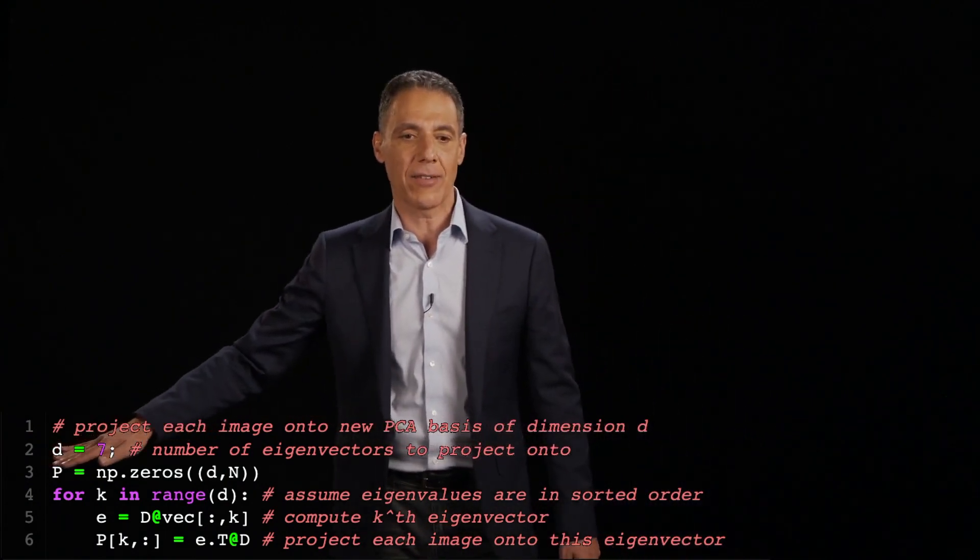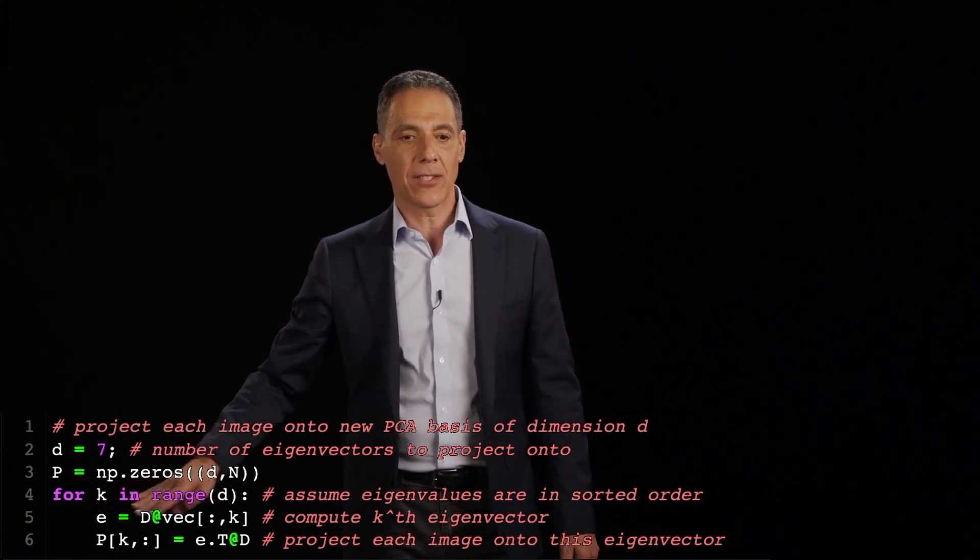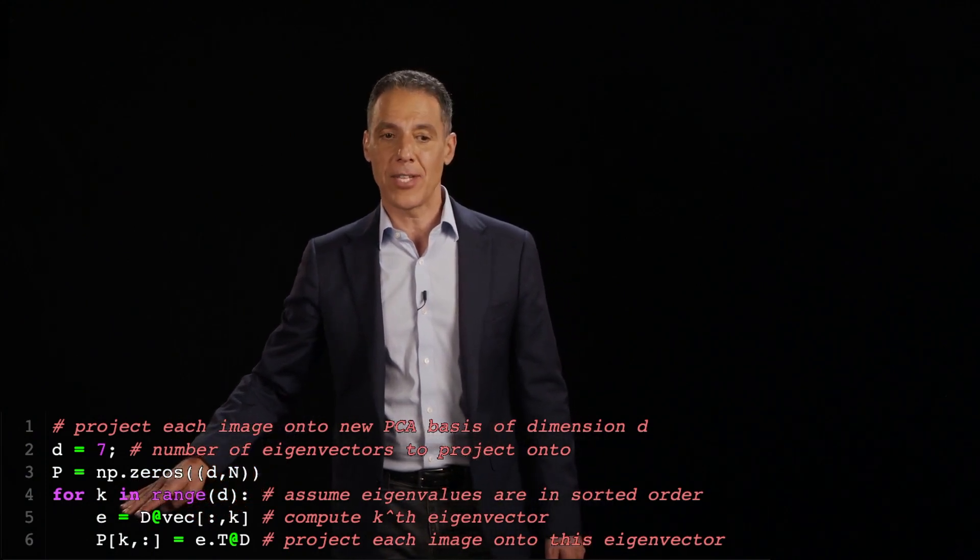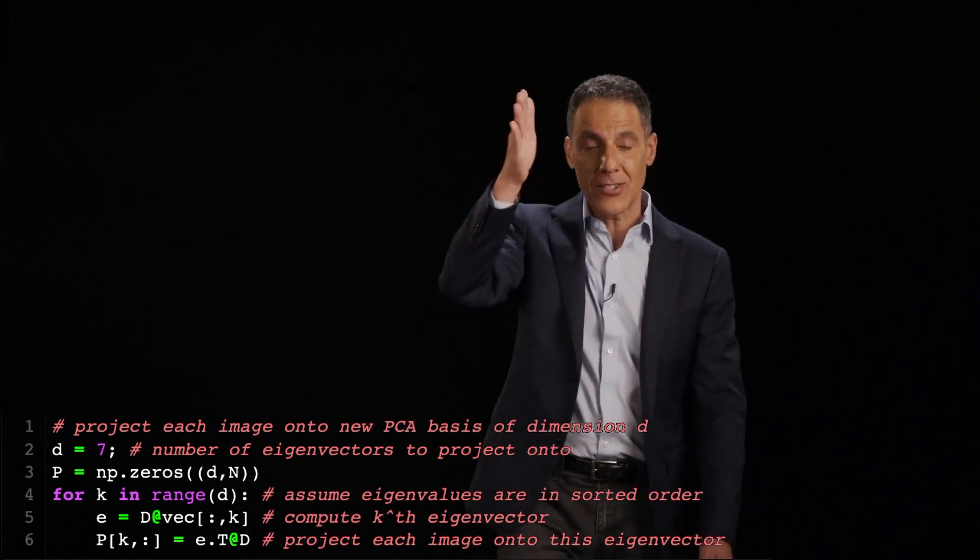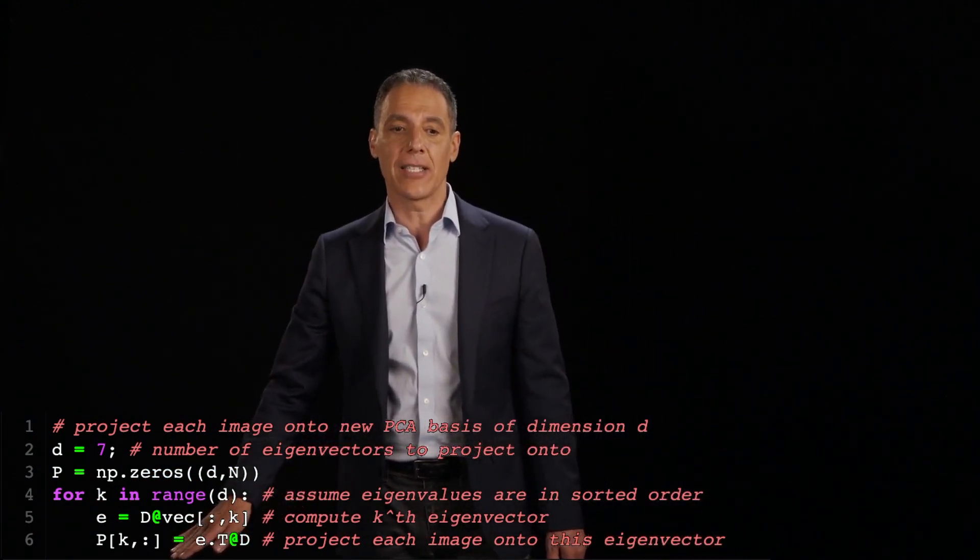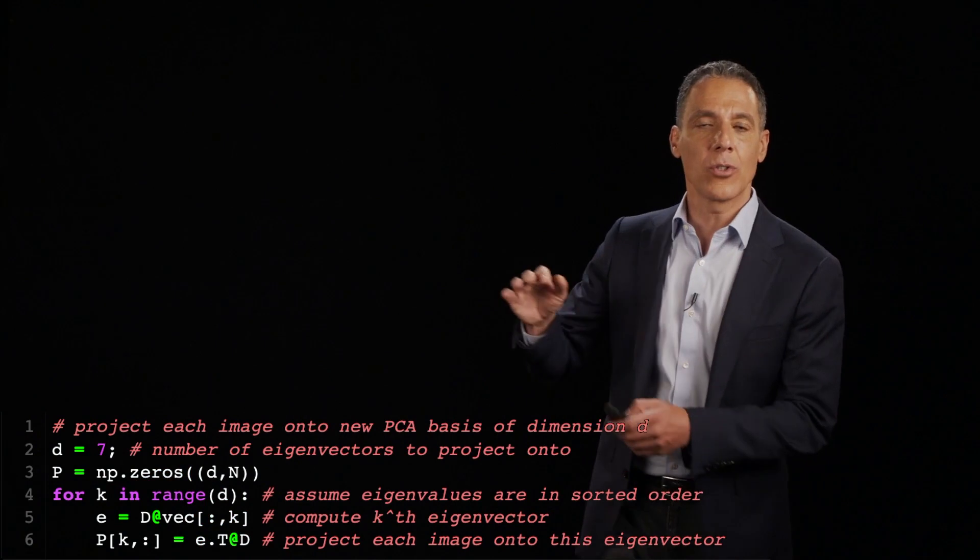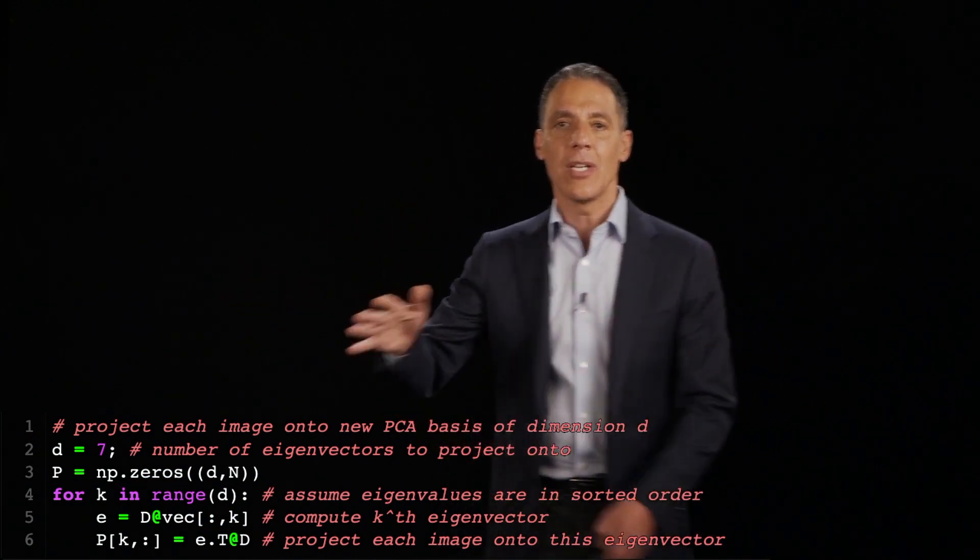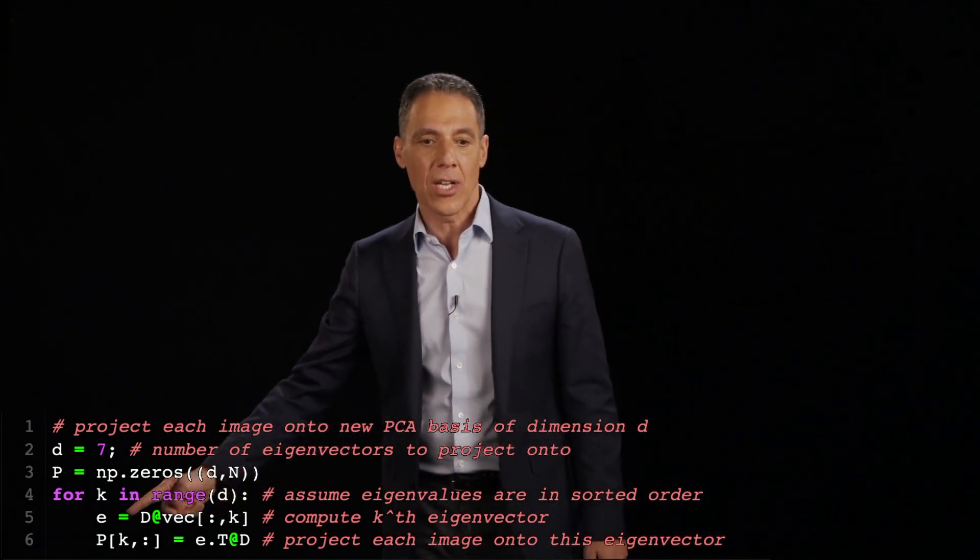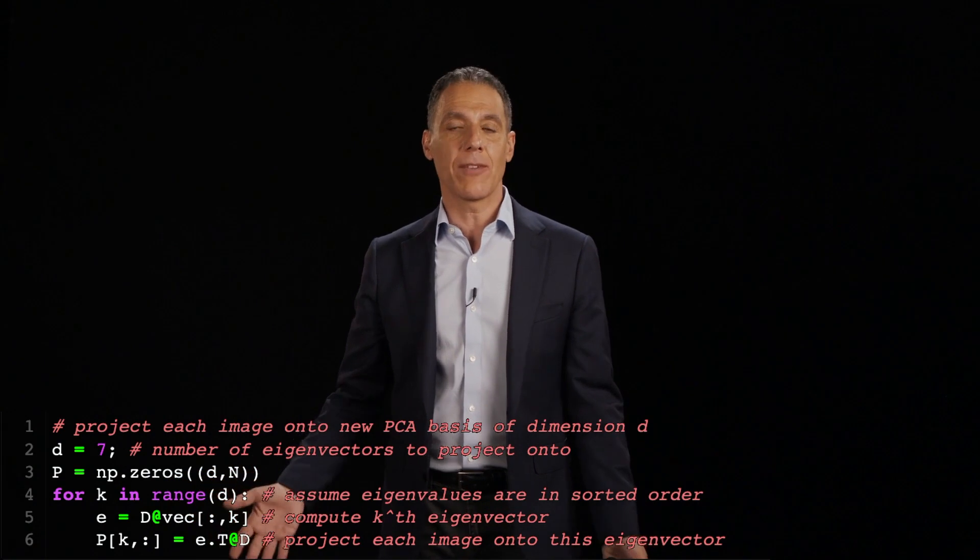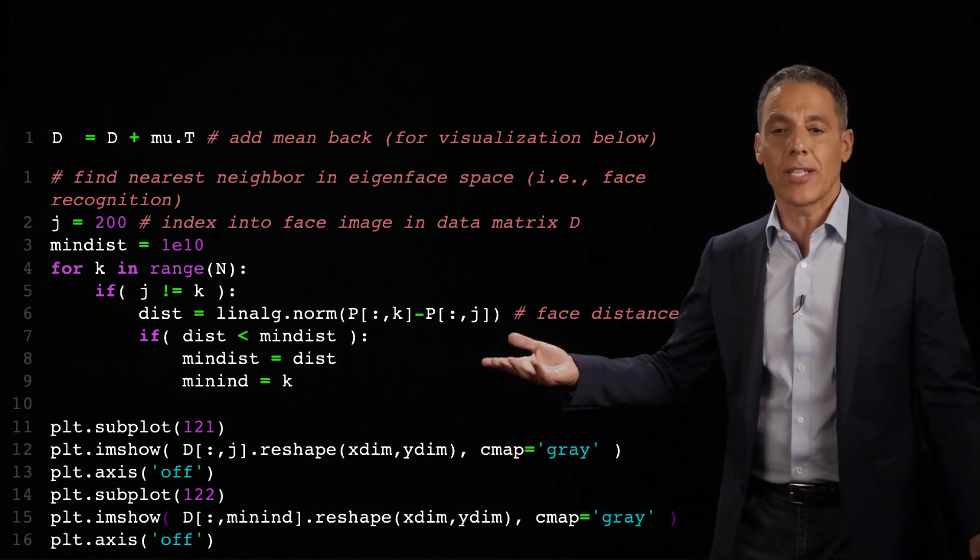All right. So I'm going to look at 7 eigenvectors. So there is the for loop here. I'm going to grab each of the eigenvectors. So I grab it out of the original covariance, multiply it by the data matrix, and then simply project my data, which are all of the faces, onto each of 7 eigenvectors. And what that means is that my new representation for every single face goes from 256 squared pixel values to 7 numbers. Those 7 numbers correspond to the weight associated with each of the eigenvectors that I computed in PCA.